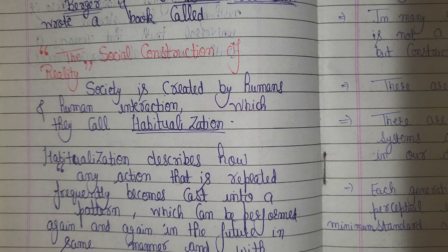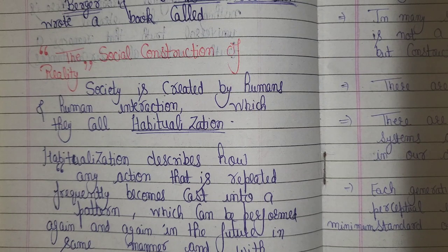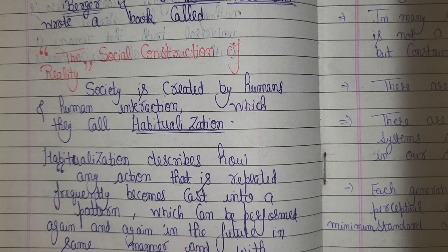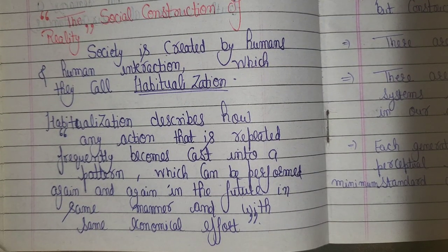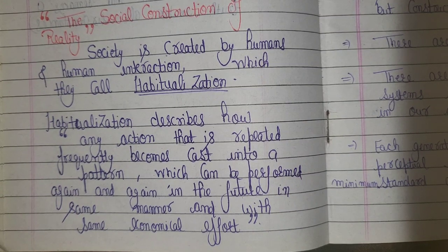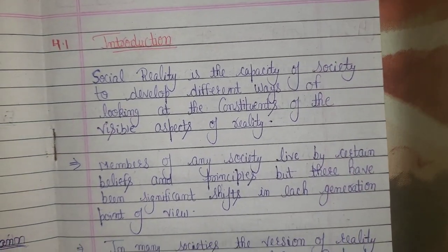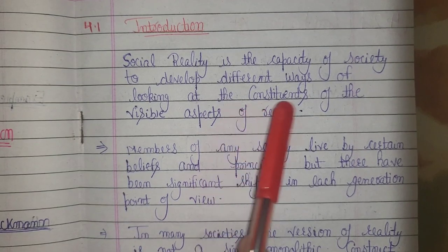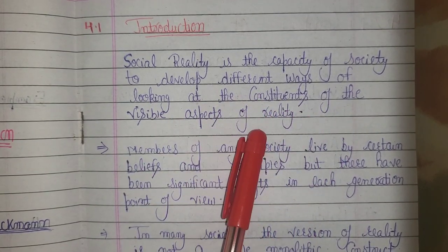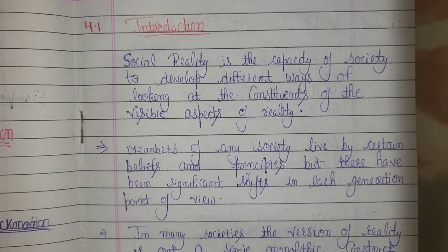Habitualization describes how any action that is repeated frequently will become a pattern — cast into a pattern with the same economical effort. Then, social reality is the capacity of society to develop different ways of looking at the constituents of the visible aspect of reality. What is our opinion, what we are observing, what we are seeing — it matters.